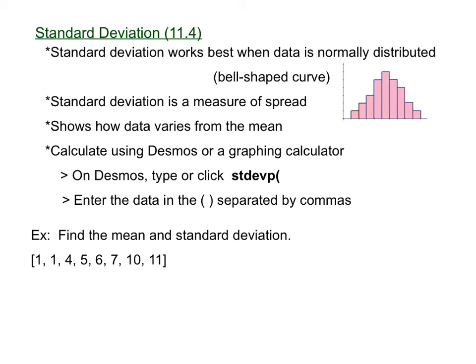The final thing we learned in this chapter was standard deviation. Standard deviation works best when data is normally distributed. A graph is said to be normally distributed when it makes a bell-shaped curve. Standard deviation is a measure of spread — it shows how the data varies from the mean, so it shows how far the data values are spread out from the mean. To calculate the standard deviation, we use Desmos or a graphing calculator. You do not need to calculate standard deviation by hand. On Desmos, we type STDEVP and then enter all of the data values in the parentheses separated by commas.